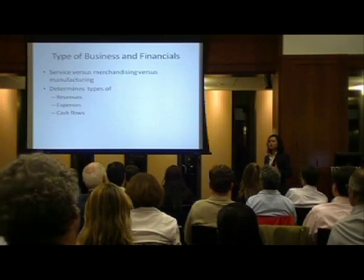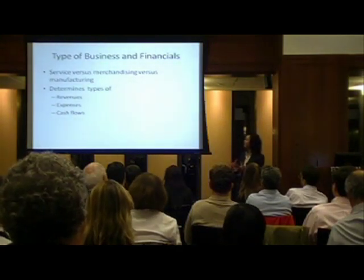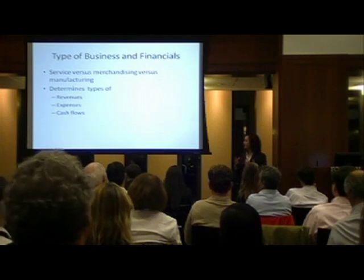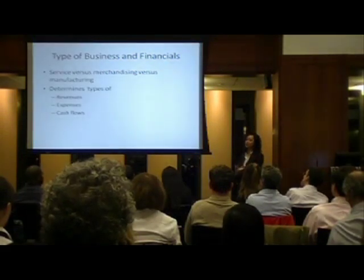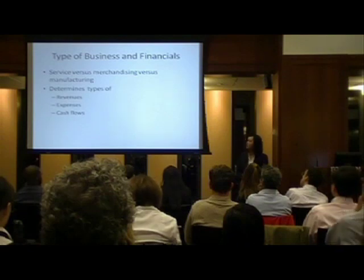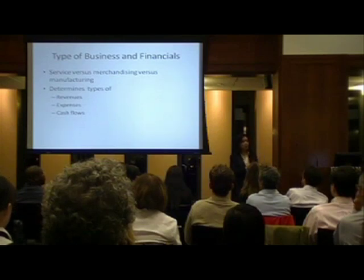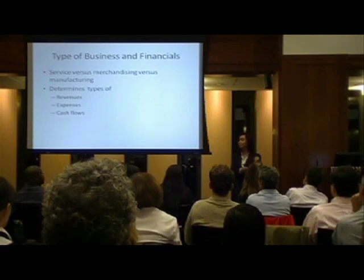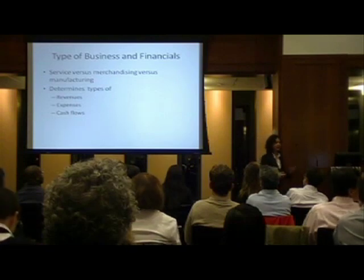Once you've thought about your industry and what your financial statements will look like, you need to think about the types of revenues, expenses, and cash flows associated with a typical company in that industry. For instance, a web-based company may not need a lot of equipment, whereas a company making or baking products may need equipment and more inventory. The type of business you're in translates to the types of revenues you expect, the expenses you incur, and the types of cash flows.